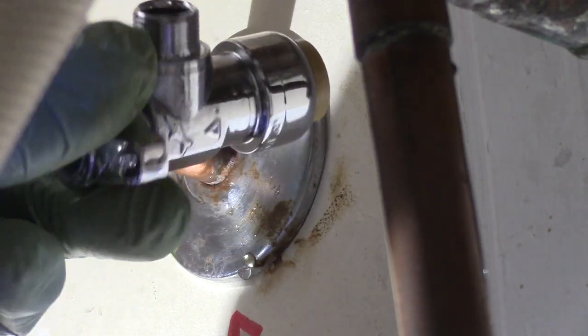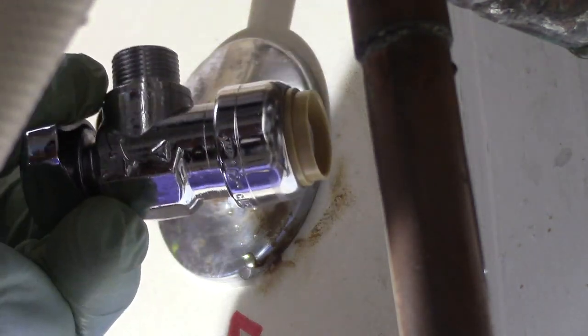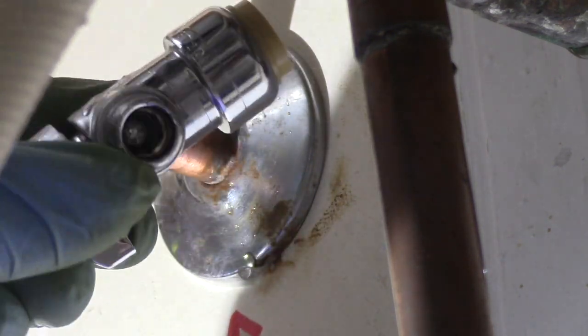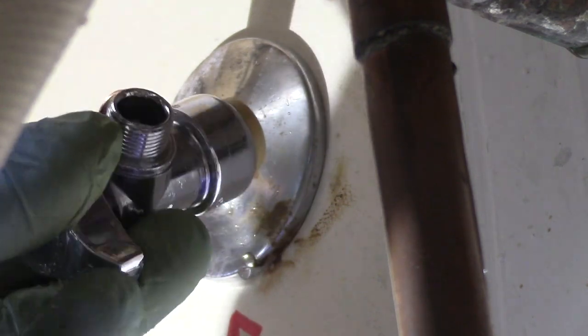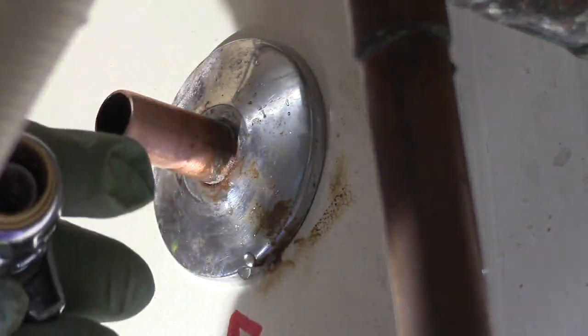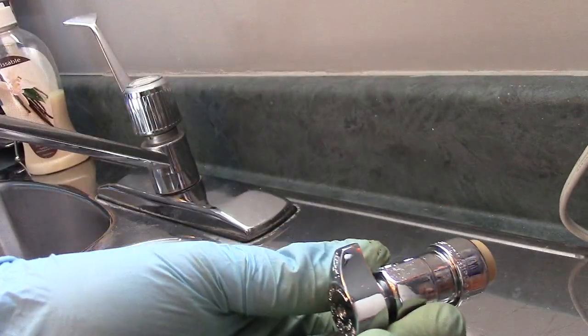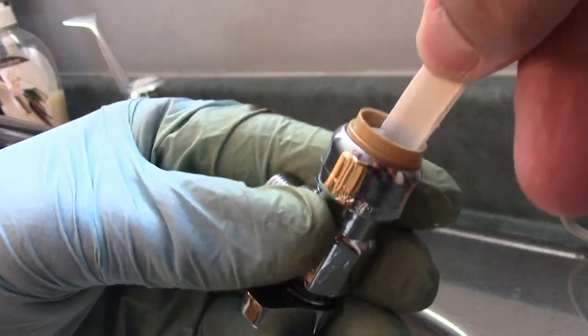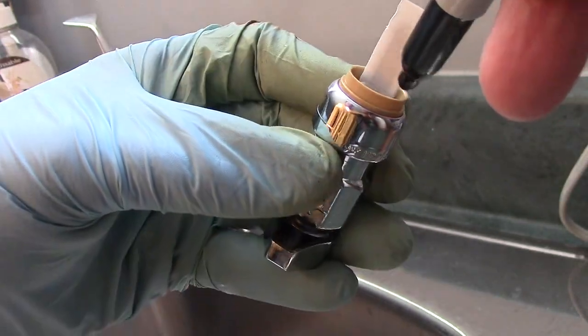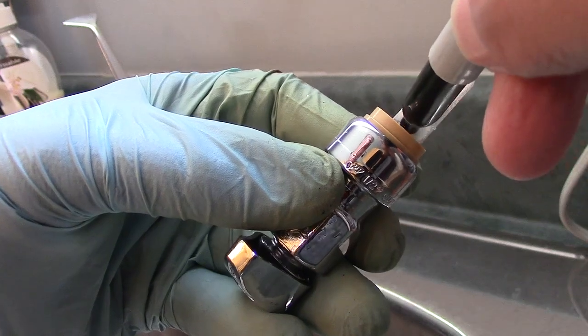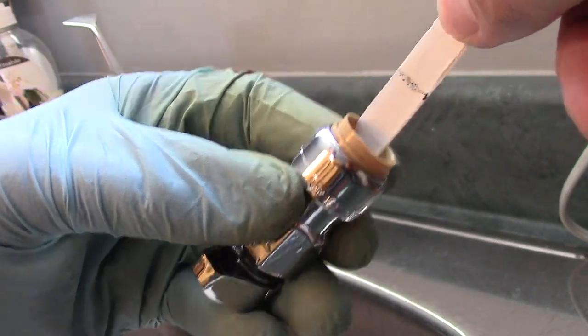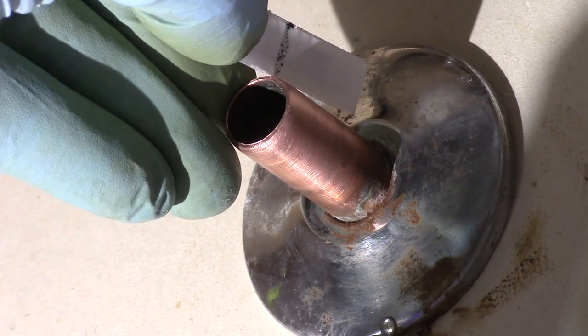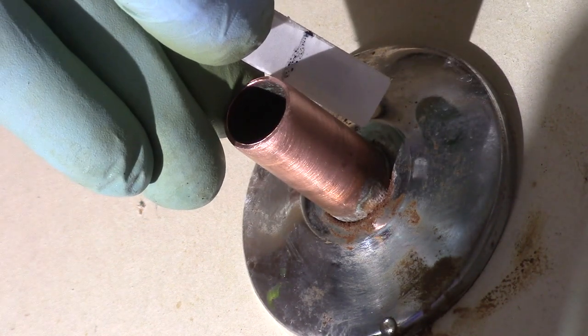We will install a SharkBite shut off valve for this. This is a great product but not all plumbers like this, and we can understand their concern. We would not install this behind a wall where we could not see it. Before we install it, we want to make sure we have the correct depth. We take any type of plastic and insert it inside and mark off the depth of the valve. Then we mark off the depth to our pipe so we have a better idea how far the valve will go into the pipe.